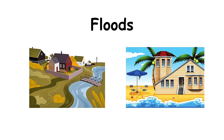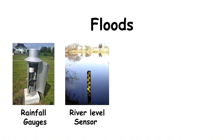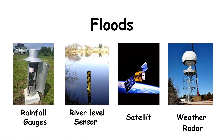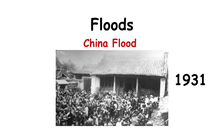Scientists monitor floods using rainfall gauges, river-level sensors, satellites, and weather radar. These tools help predict potential flooding and provide early warnings. One of the worst floods in history was the Great China Flood of 1931.